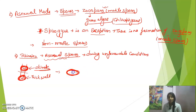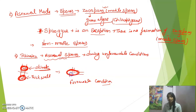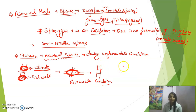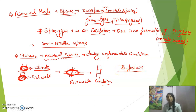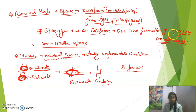When favorable conditions return, the thick wall will burst and the spores will come out, germinating into a new Spirogyra filament. So to summarize: Spirogyra forms asexual spores called akinetes. Spirogyra is an exception among green algae because it does not form motile zoospores — green algae normally form both motile and non-motile spores.